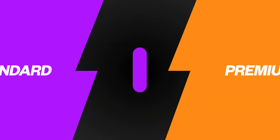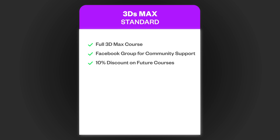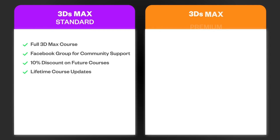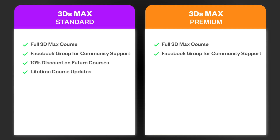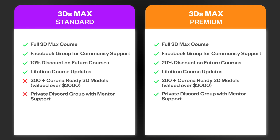Standard vs. Premium: the standard package for 3D Max includes the full 3D Max course, a Facebook group invite for community support, a 10% discount on any future course, and a lifetime membership to the VizCourse platform. The premium package for 3D Max includes all of the above, plus a 20% discount on future courses, over 200 custom-made 3D models, and a special invite to a private Discord channel.